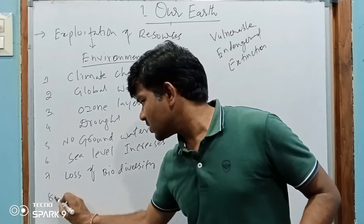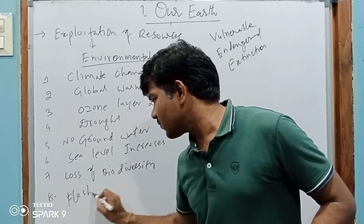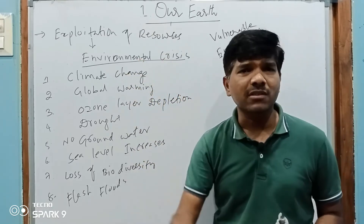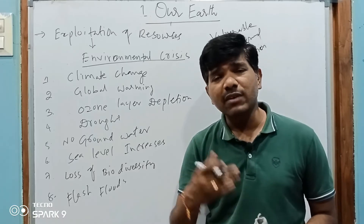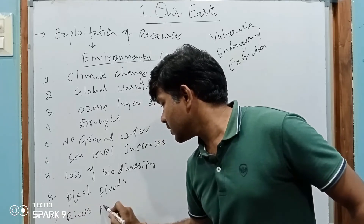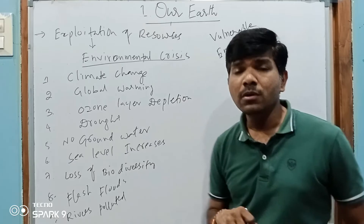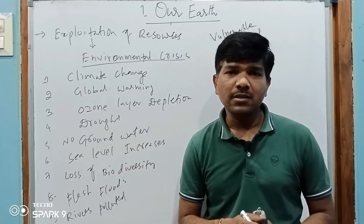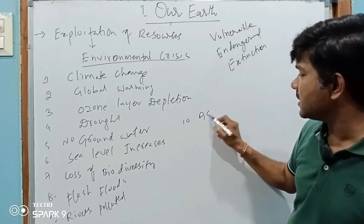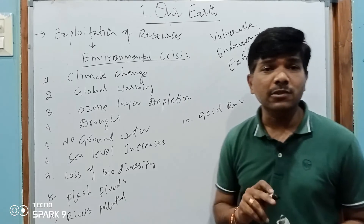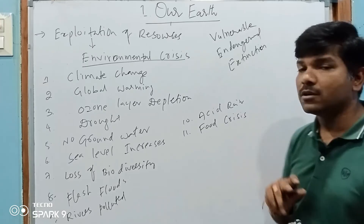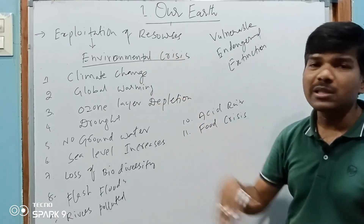There will be no drinking water, flash floods will come, sudden rainfall will cause floods. Rivers also will be polluted due to mining and quarrying. Acid rains will also happen. Food crisis will occur — there will be no possibility of food. Now you are enjoying food, but if you neglect the environment, all these things will happen. If all these happen, there is no possibility of life on the planet which we call our home.